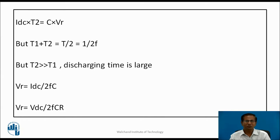From IDC × T2 = C × VR, and since T1 + T2 = T/2 = 1/(2F), and since discharging time is large, T2 >> T1, so we simply neglect T1. Therefore, VR = IDC / (2FC), or equivalently VR = Vdc / (2FCR), substituting IDC = Vdc / R.